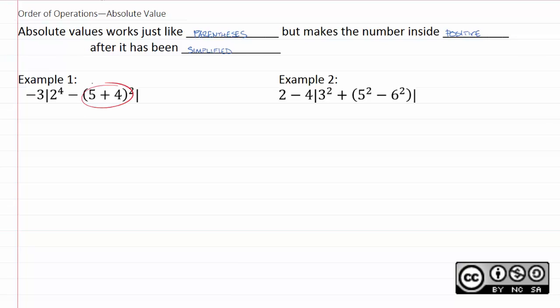This inside parenthetical is not an absolute value, so we just add it normally. So, we'll just have −3|2⁴ − (5 + 4)²|. Well, 5 plus 4 is 9, so we have 9 squared.